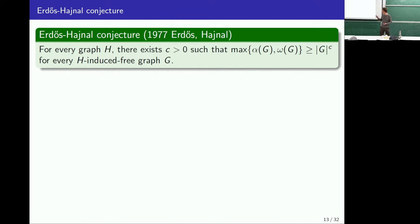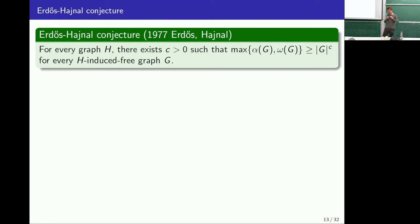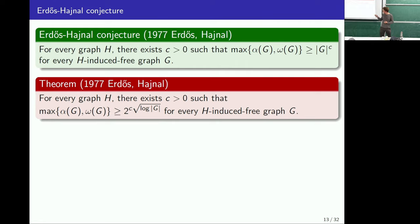There's this famous conjecture of Erdős-Hajnal: if you forbid some graph as an induced subgraph, then within your class of graphs you can always find a polynomial-sized clique (omega of G) or independent set (alpha of G). In other words, there's some positive constant C so that you can always find a clique or independent set of size at least n^C. They proved you can get at least 2^(sqrt(log n)), and this was only very recently improved by adding an extra log log factor.